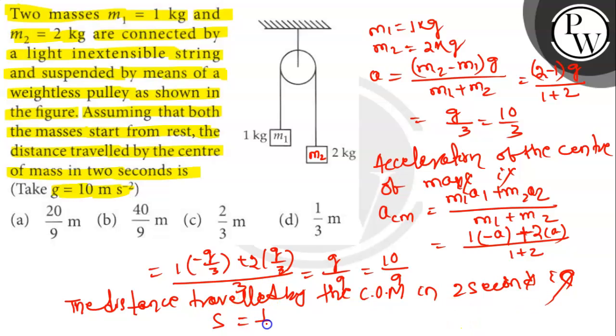equal to half ACM t squared. That is 1 by 2 times 10 by 9 times 2 squared, which equals 20 by 9 meters. So option A is the correct answer. Thank you.